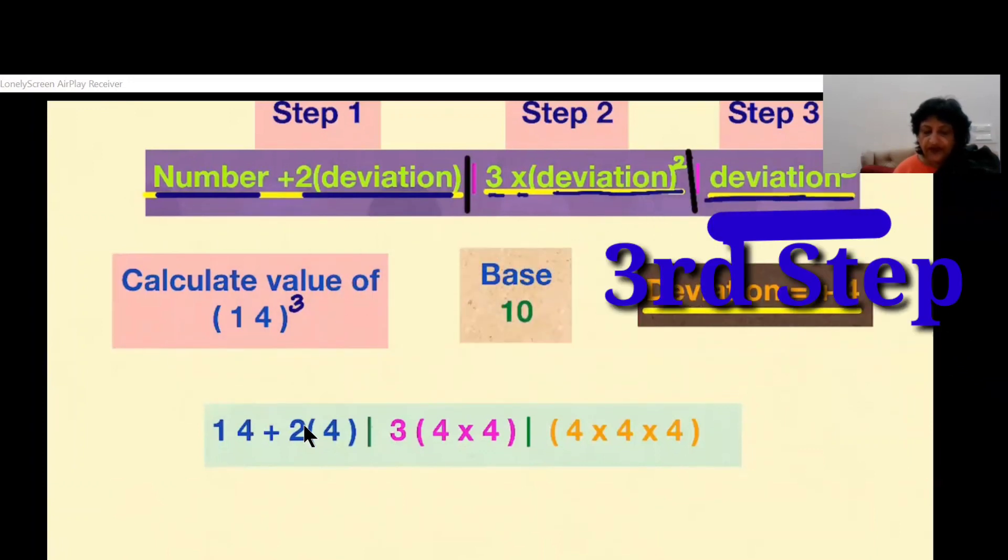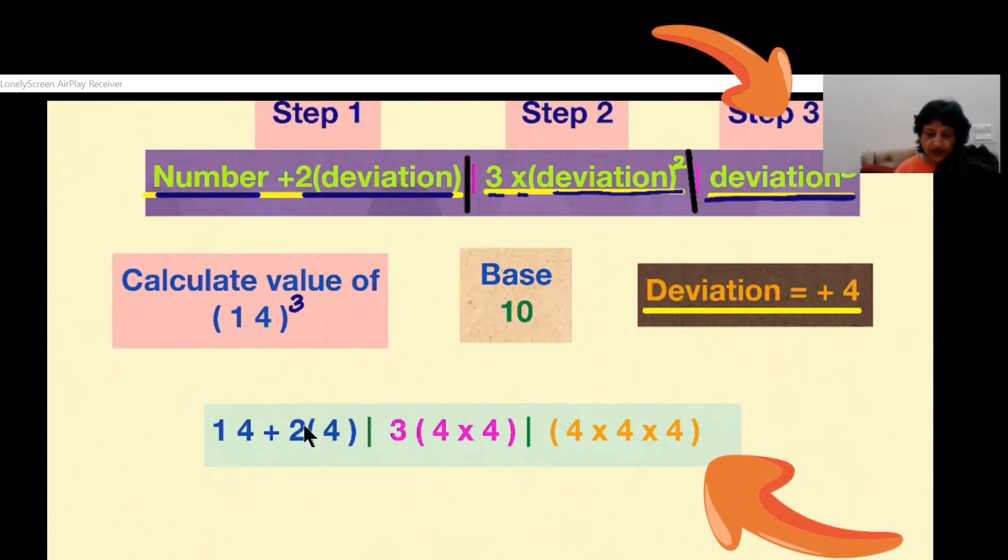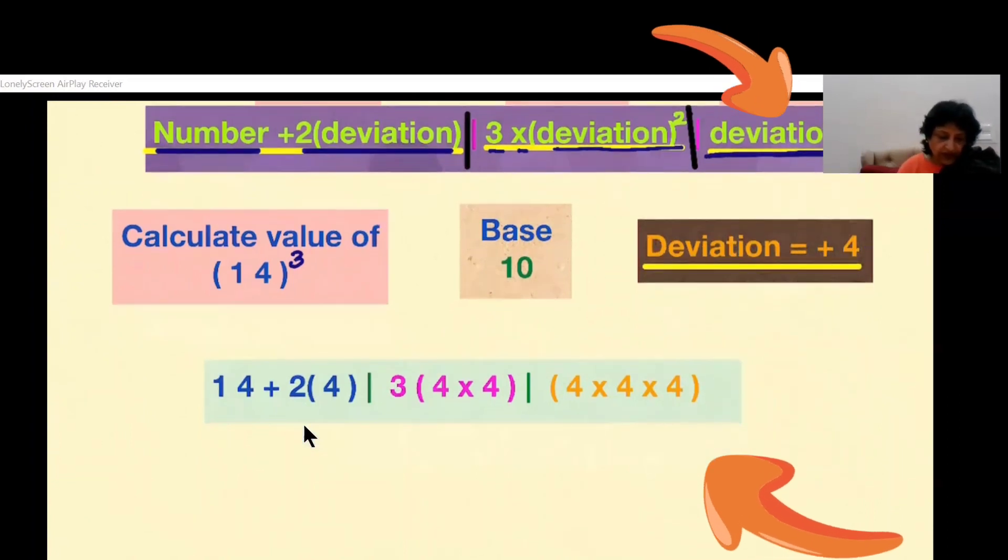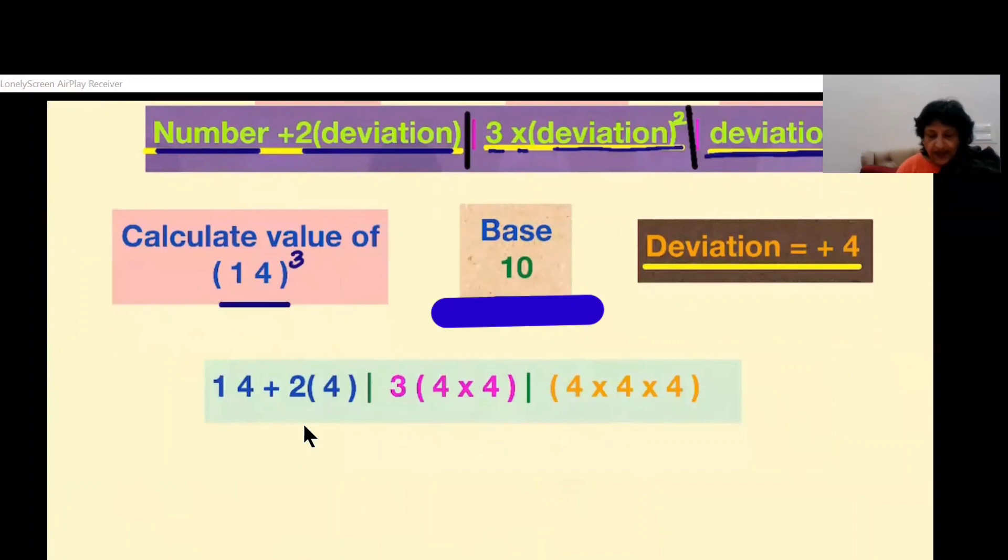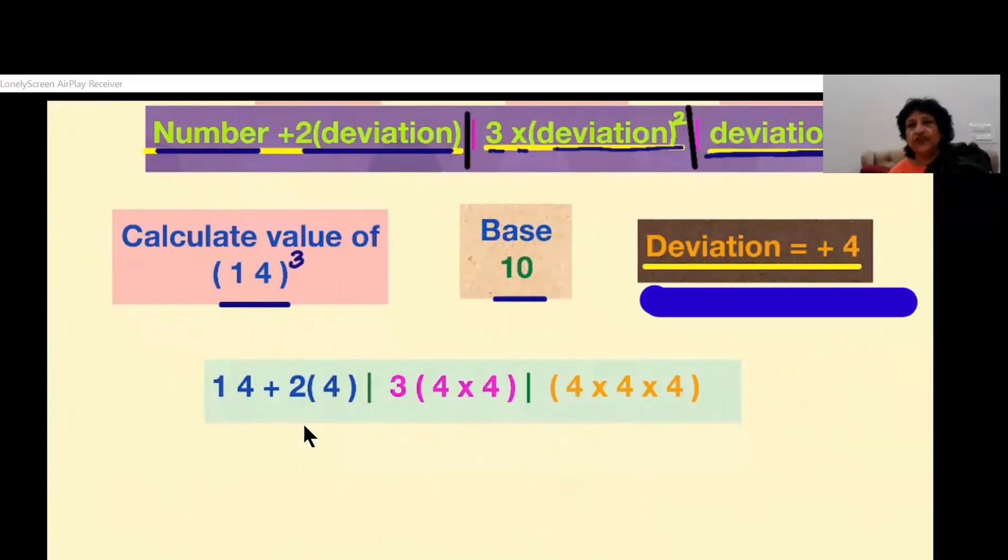The base of 14 is 10 and the deviation is plus 4, because 14 has 4 more than 10. So let's see now.